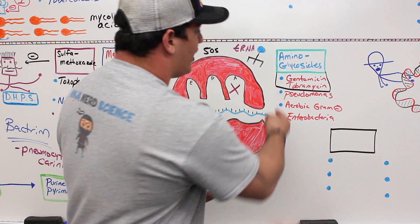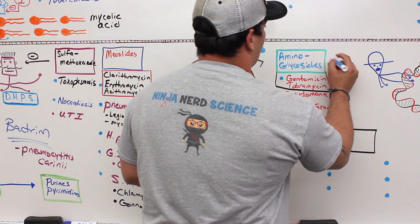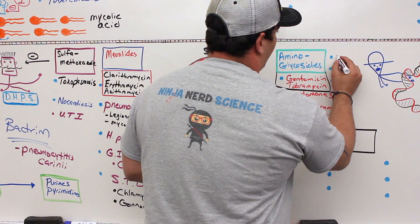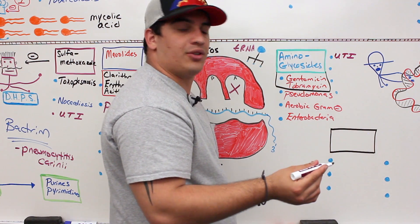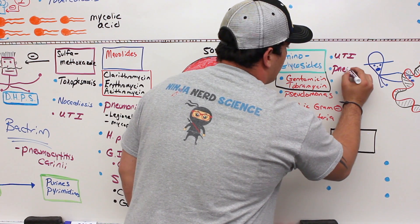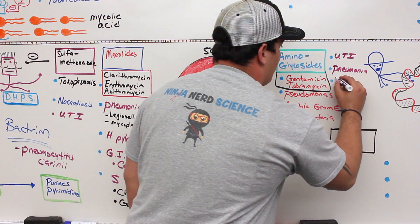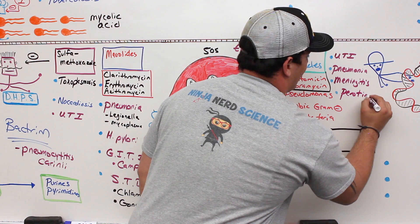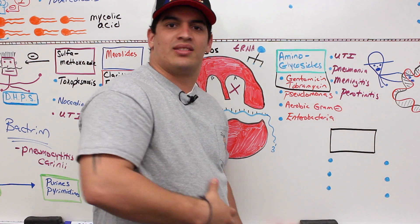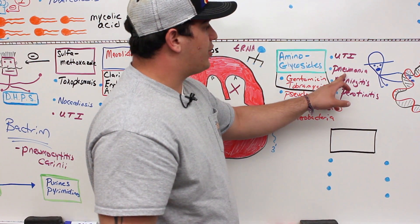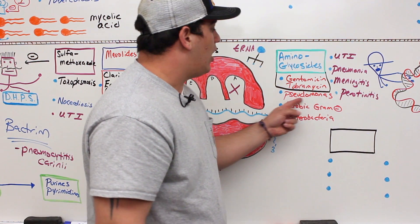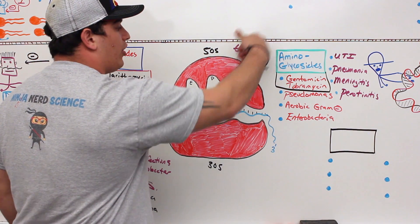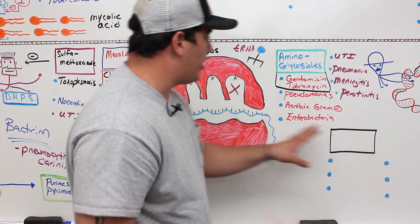Aminoglycosides can treat four main things: urinary tract infections, pneumonia, meningitis, and peritonitis — which is inflammation of the peritoneum inside the gastrointestinal tract. The bacteria they target include Pseudomonas, aerobic gram negative bacteria, and certain types of enterobacteria. Their mechanism is inhibiting the tRNA from binding into the A site.